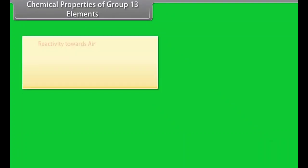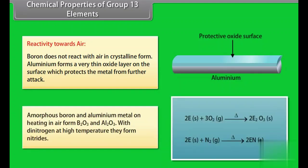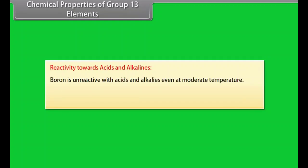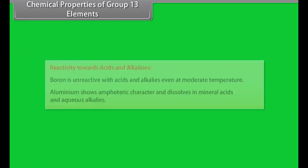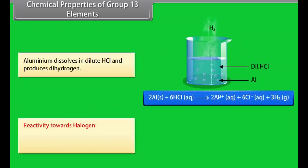Chemical properties of group 13 elements. Reactivity towards air: boron does not react with air in crystalline form. Aluminium forms a very thin oxide layer on the surface which protects the metal from further attack. Amorphous boron and aluminium metal on heating in air form B2O3 and Al2O3. With dinitrogen at high temperature they form nitrides. Reactivity towards acids and alkalies: boron is unreactive with acids and alkalies even at moderate temperature. Aluminium shows amphoteric character and dissolves in mineral acids and aqueous alkalies. Aluminium dissolves in dilute HCl and produces dihydrogen. Reactivity towards halogen: boron family elements react with halogens to form trihalides.